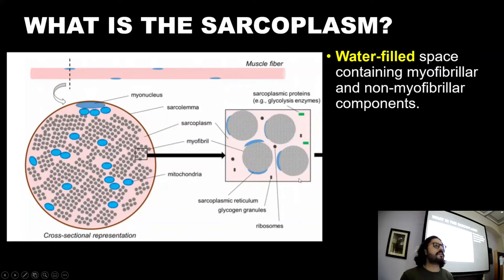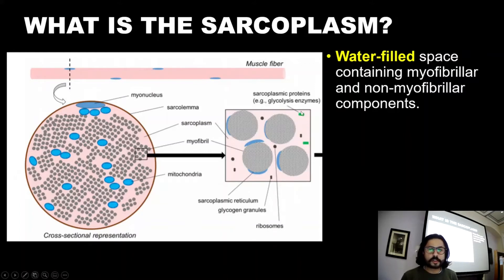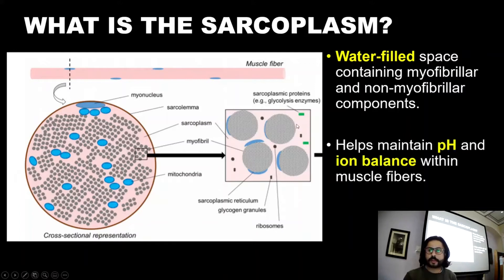The non-myofibrillar components include the sarcoplasmic reticulum, which contains calcium important for enabling cross-bridge formation and muscle contraction. We've also got ribosomes, which are very important in protein synthesis, and glycolysis enzymes. Mitochondria are circulating in the sarcoplasm as well. Basically, all of the cell contents that you would have in a normal cell are also present in the water part of the muscle fiber. That's what the sarcoplasm is.